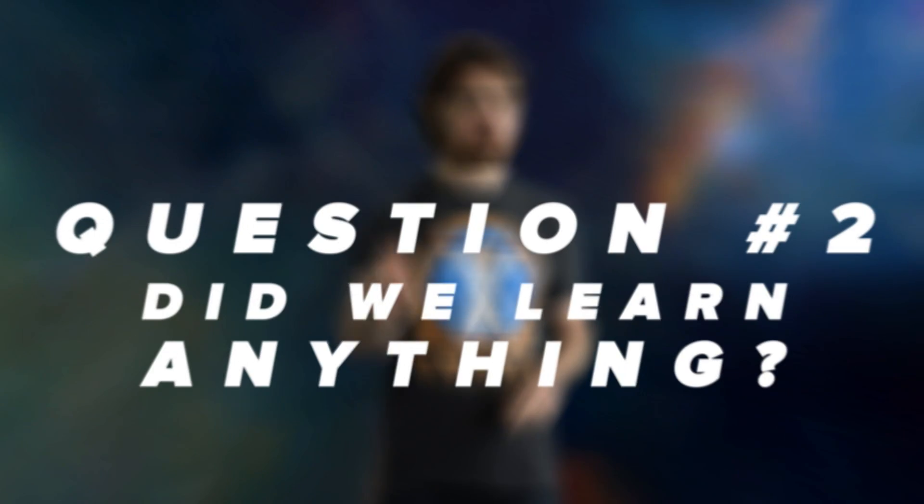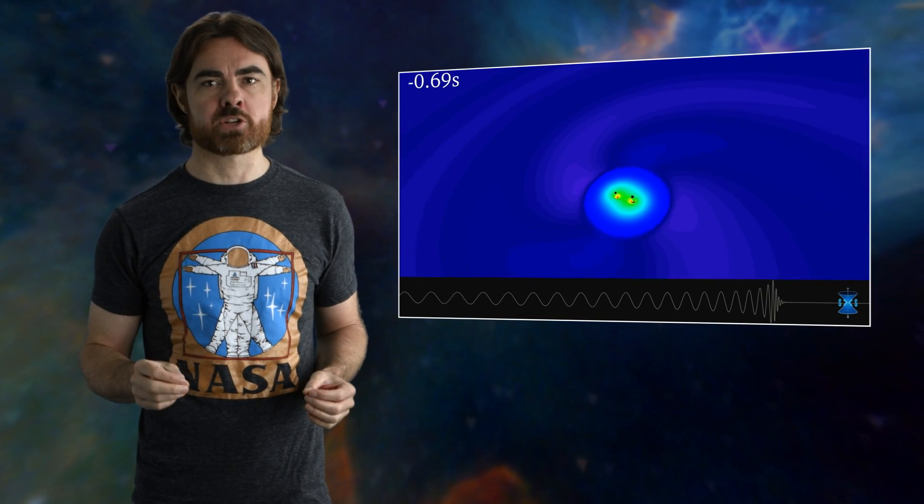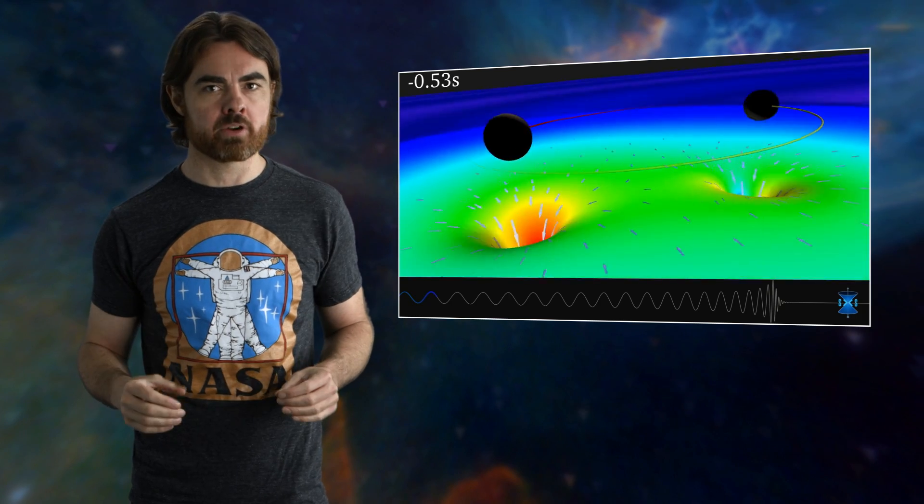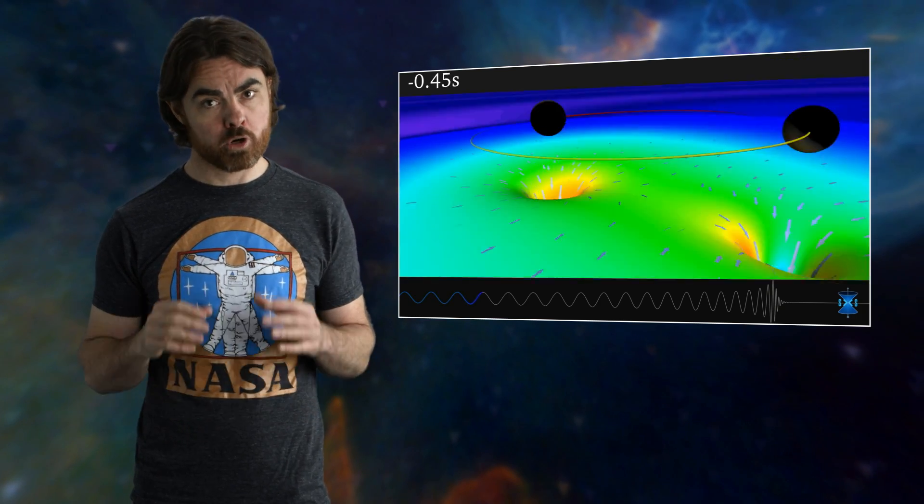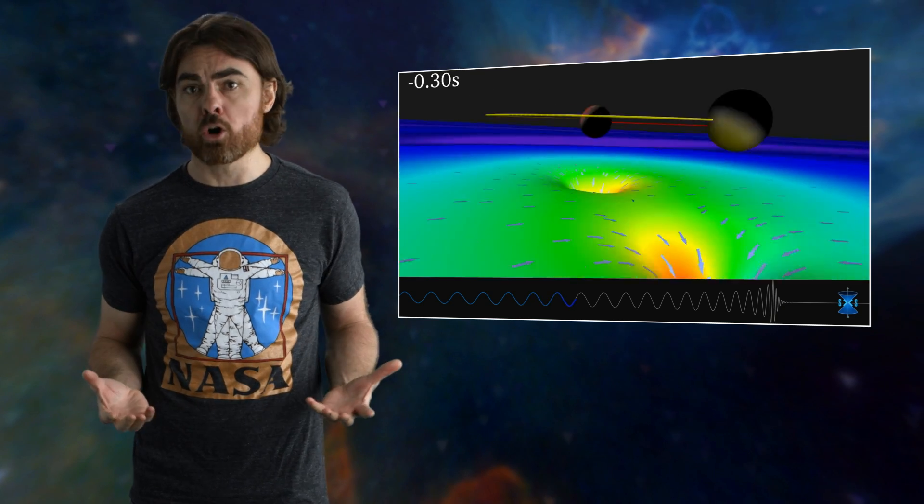Question number two. Did we learn anything? It's kind of amazing that the signals observed look exactly like what we expect them to from the predictions of general relativity. Beyond the detection of gravitational waves, this is another awesome validation of the theory. We now have more confidence in our understanding of the space-time around black holes.